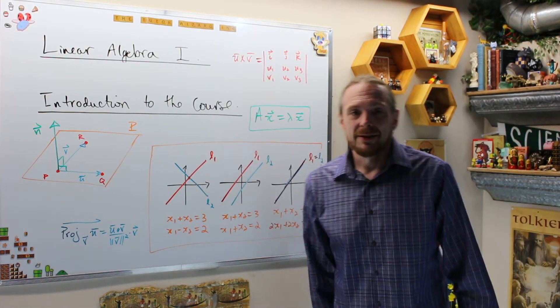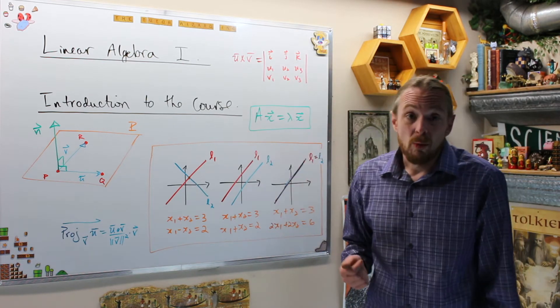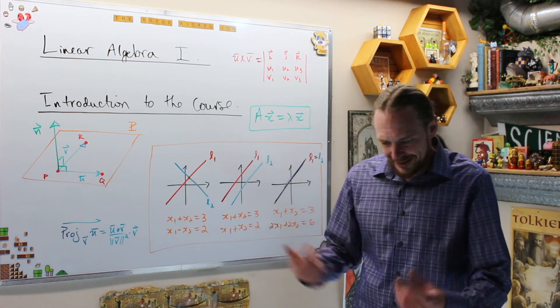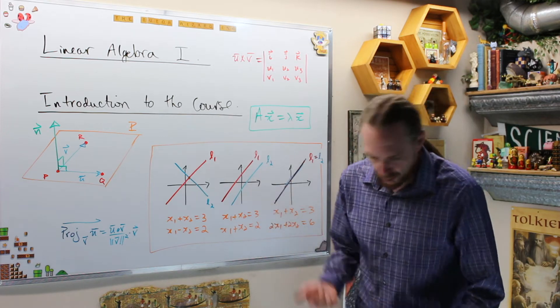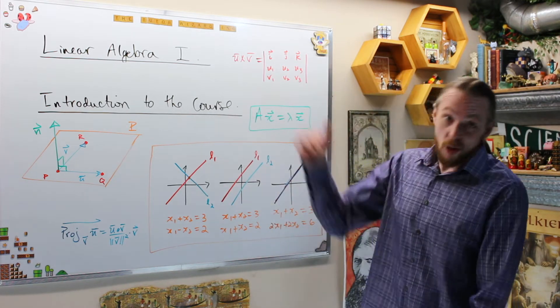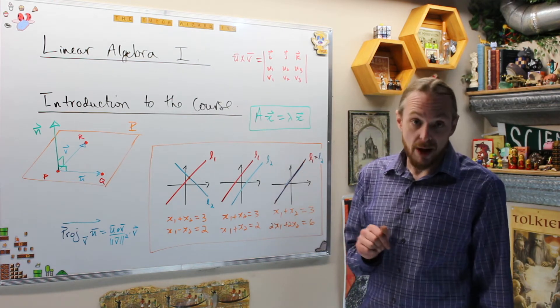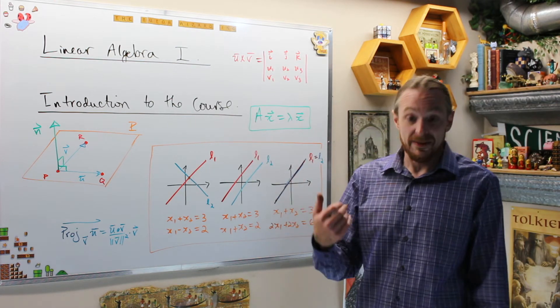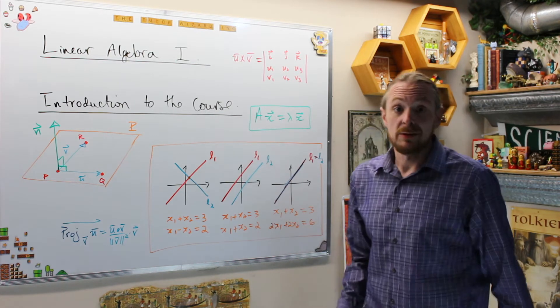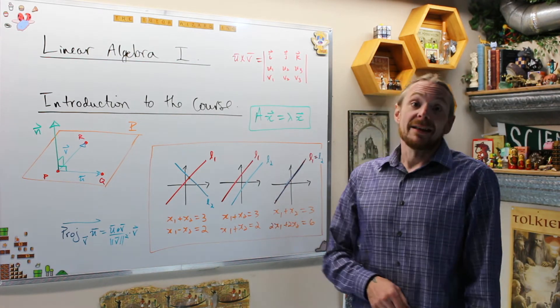What we're going to do is a linear algebra series now. This will be a linear algebra 1 series specifically. I don't know what class is going to be called. Math 120 or 125 or whatever. We're going to do all the topics that should happen in a first year linear algebra 1 class. What we're going to do in this video is just give you an overview and an introduction to what the heck happens in a linear algebra class.